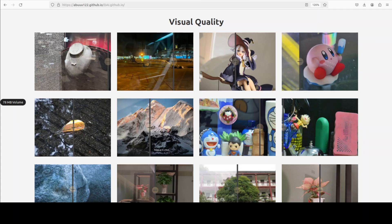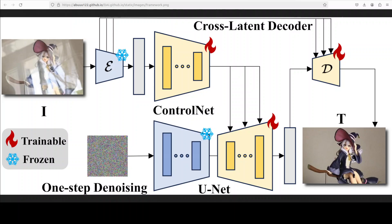Reflection removal from a single image remains a highly challenging task due to the complex entanglement between target scenes and unwanted reflections, but this framework tries to resolve it. Despite significant progress, most existing methods are hindered by the scarcity of high-quality diverse data and insufficient restoration priors — and that is where this project tries to help out. They have also introduced a dataset named Diverse Reflection Removal (DRR), created by randomly rotating reflective mediums in target scenes, enabling a variation of reflection angles and intensities.